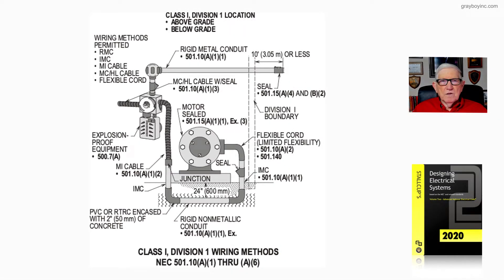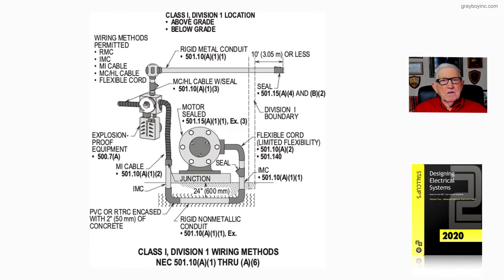Let's take a look at figure 21-21 out of Stockup's Designing Electrical System book, volume 2. This deals with Class 1, Division 1 installing wiring methods above grade and below grade. To the left of the illustration, we have wiring methods permitted, like rigid metal conduit, IMC, MI cable, MCHL cable, flexible cord — some of those that are used the most.